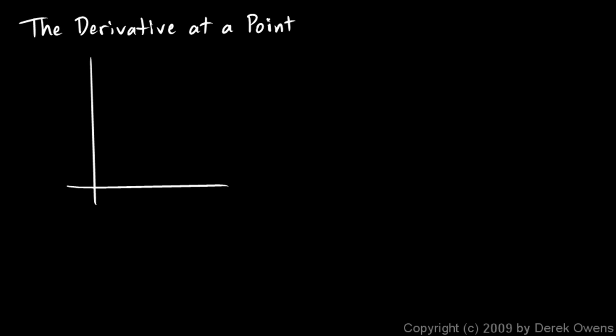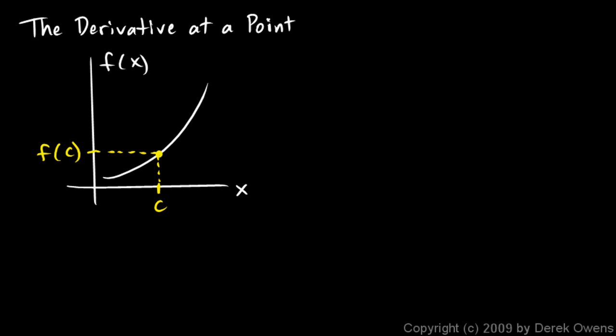Next we're going to be talking about difference quotients, and we'll start off with this idea of the derivative at a point. Let's imagine we have our axes — our independent variable is x — and we have some function of x, which we'll have as a simple curve in the plane. Suppose we have some x value here, we'll call it c, and that corresponds to a y value of f of c. Our goal is to find the derivative at that point c — the slope of the graph at a particular point. Another way to say this is that we're trying to find the instantaneous rate of change of one variable relative to another at a particular moment. We call this the derivative of the function at a given value of x, and the derivative will be the slope of the graph at that point — the same as the slope of the line tangent to the graph at that point.